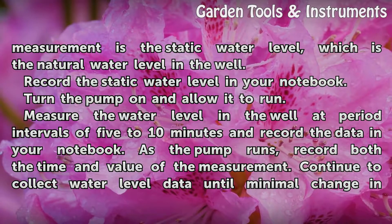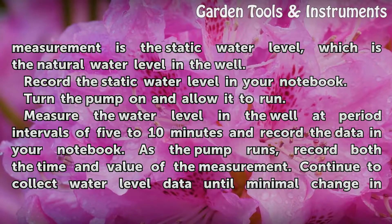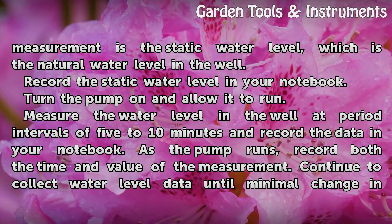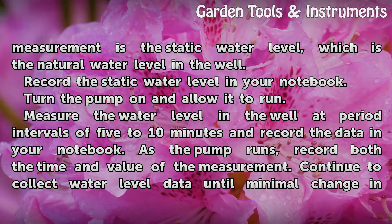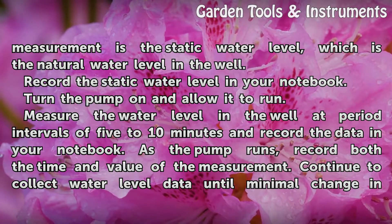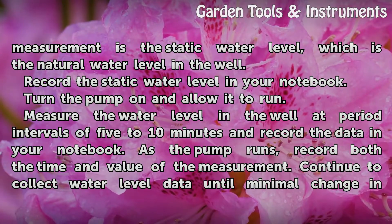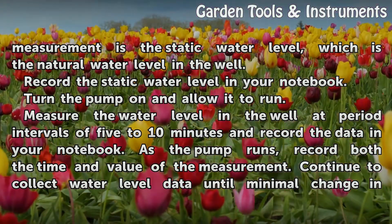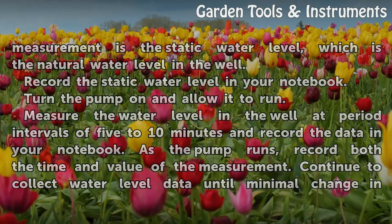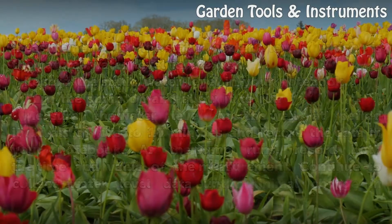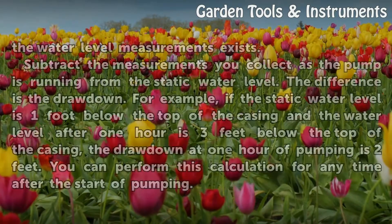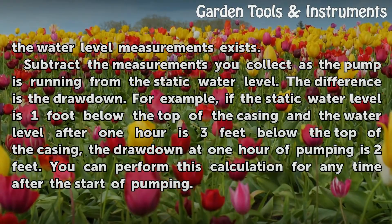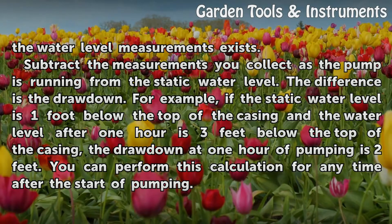Turn the pump on and allow it to run. Measure the water level in the well at periodic intervals of 5 to 10 minutes and record the data in your notebook. As the pump runs, record both the time and value of each measurement.